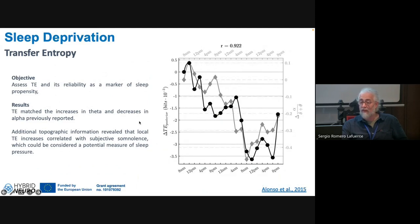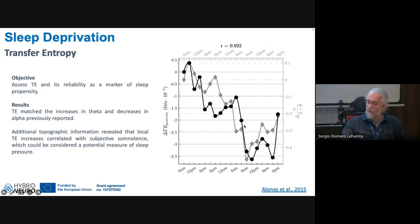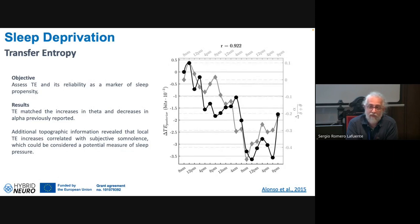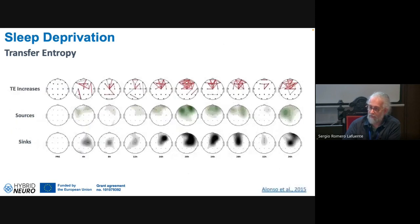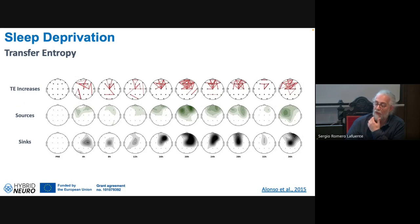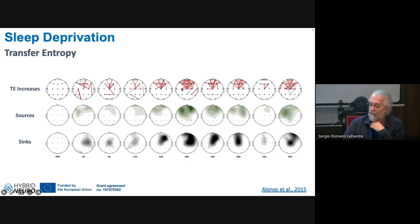Transfer entropy also showed the highest correlation with plasma concentration among all connectivity measures in that hallucinogen study — not just measuring connectivity but capturing the directionality of interactions gave the best results. Similarly, in a sleep deprivation study, transfer entropy in specific brain regions tracked sleep propensity very well over time, and additionally identified which brain areas were driving the somnolence — information that simpler connectivity measures cannot provide.